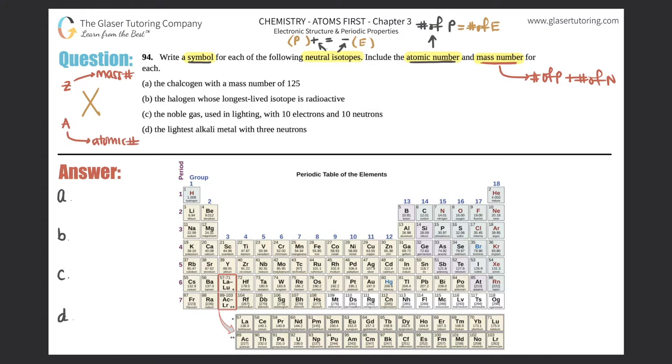Let's get started. Part A: The chalcogen with the mass number of 125. Well, where is the chalcogen group? I like to look at it as 'ogen.' Ogen looks very close to oxygen, so if you can't remember chalcogen, just look at the ogen at the end. That kind of looks like oxygen, so this is oxygen's group.